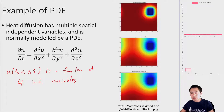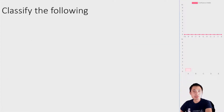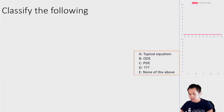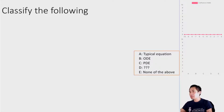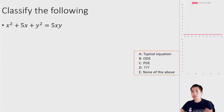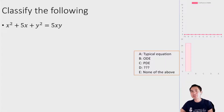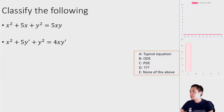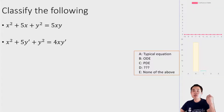Let's classify each of the following as a typical equation, an ODE, a PDE, or none of the above — give the most specific classification. First: x² + 5x + y² = 5xy. This is just an ordinary equation. What about x² + 5y′ + y² + 4xy′ = 4xy′? Most people got this right — this is an ODE because it has an ordinary derivative, y′, which is dy/dx.